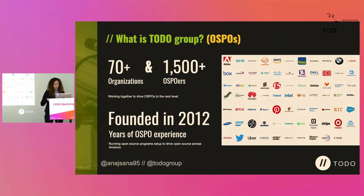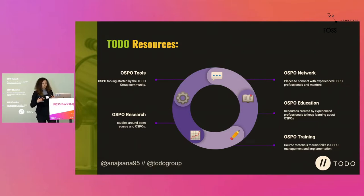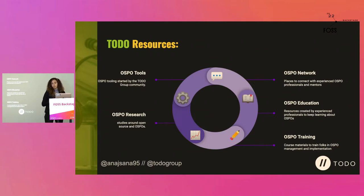A bit about TODO Group: we are an open community of more than 70 organizations from all around the world, and more than 1,000 OSPO contributors. TODO Group is not just about general members — it's about its great community contributing to the open project and working together to drive OSPOs to the next level. We have great resources: OSPO network, education, training, research, and OSPO tools. Check the TODO GitHub repo and tutogroup.org/community for a great onboarding guide for newcomers.